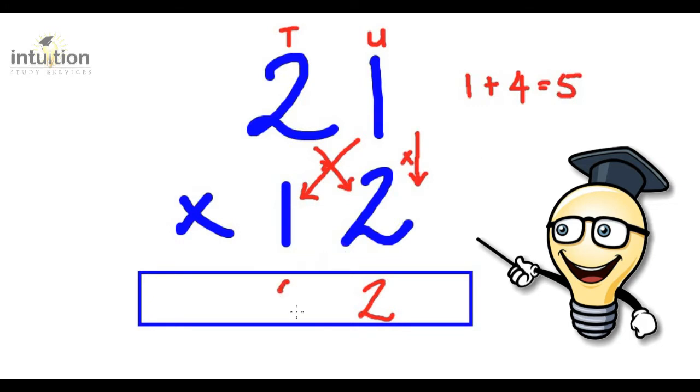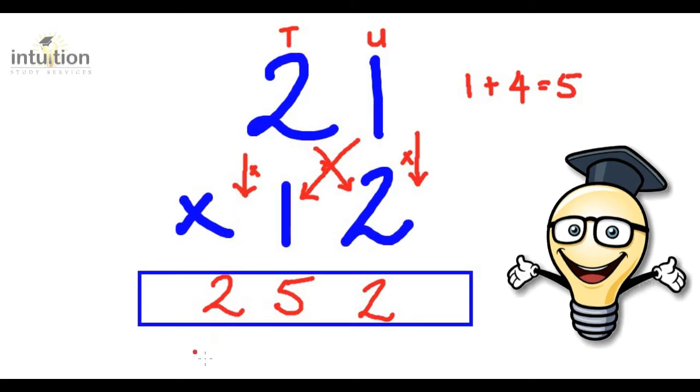Okay, so then we put that five, in the tens column, in this left column here. So we put the five here. And then finally we multiply just the tens column. So we multiply down, so we've got two times one and that gives us two. So the answer is 252. Okay, so if you notice the pattern, we've got a down arrow, a cross in the middle and down, hence the name down cross down.